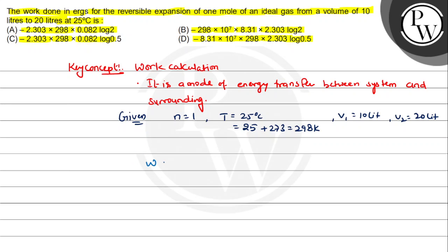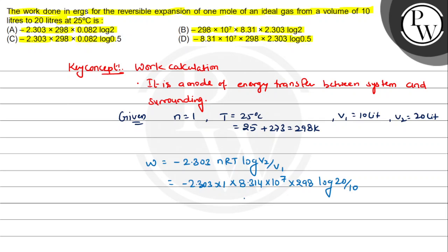The work done is W = minus 2.303 × nRT × log(V2/V1). Substituting the values: minus 2.303 × 1 × 8.314 × 10⁷ × 298 × log(20/10), which gives minus 10⁷ × 8.314 × 2.303 × 298 × log 2. This matches option 2. We hope you understood it well — best of luck!